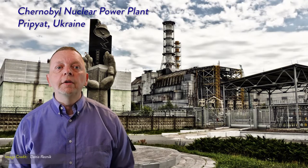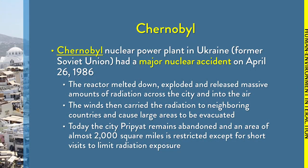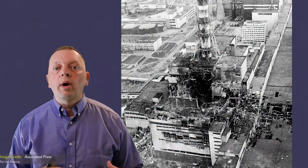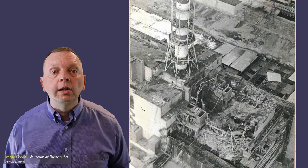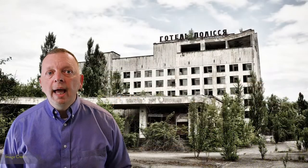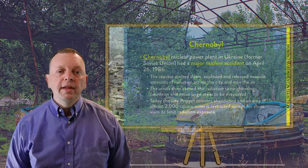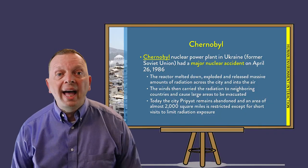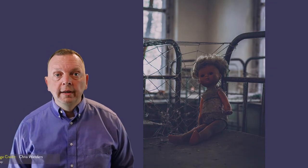In 1986, the Soviet Union found this out the hard way in a place known as Chernobyl. Due to a number of human errors, the reactor melted down, exploded, and released massive amounts of radiation across the city and into the air. The winds then carried the radiation to neighboring countries and caused large areas to be evacuated. Even today, the city of Pripyat remains abandoned and an area of almost 2,000 square miles is restricted except for very short visits to limit radiation exposure. What is so interesting about Pripyat is that people had no time to pack their belongings, so the city is left nearly intact despite not a single person living there.